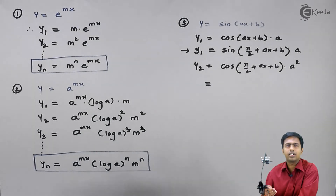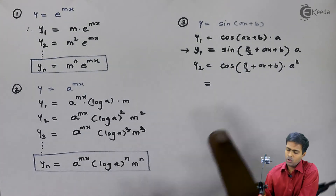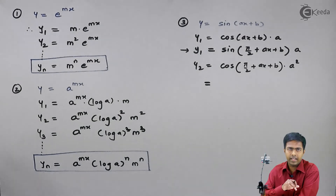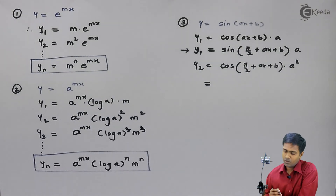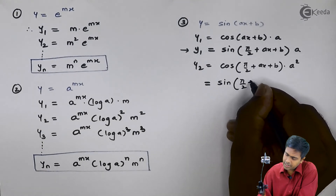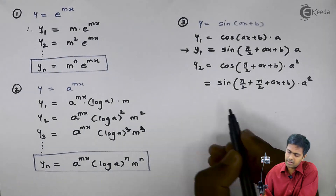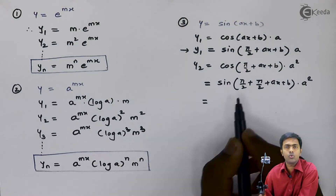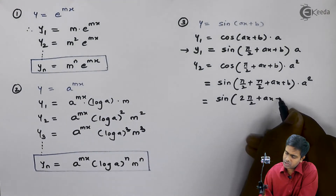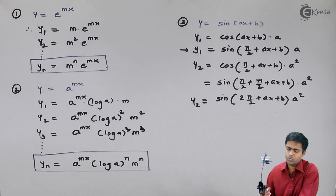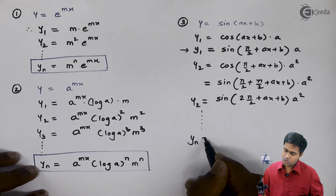Continuing with y2: differentiating sin(π/2 + ax + b) gives cos(π/2 + ax + b) times a squared. We again convert cos to sine using the same identity, where θ is now (π/2 + ax + b). This gives sin(π/2 + π/2 + ax + b) times a squared, which simplifies to sin(2·π/2 + ax + b) times a squared. So y2 equals a squared times sin(ax + b + 2·π/2).